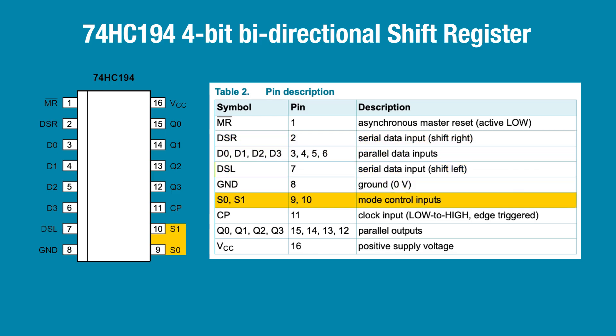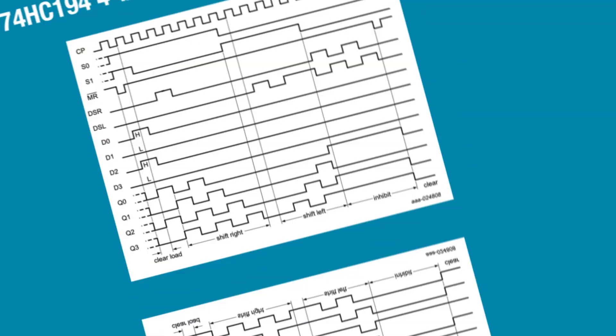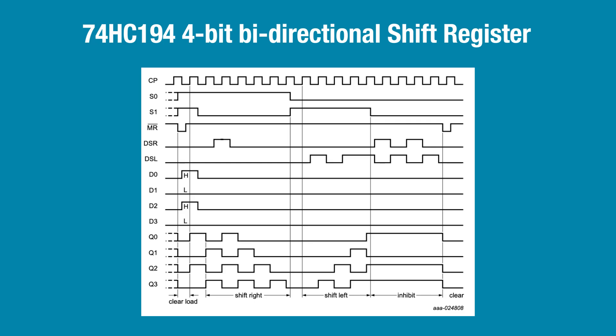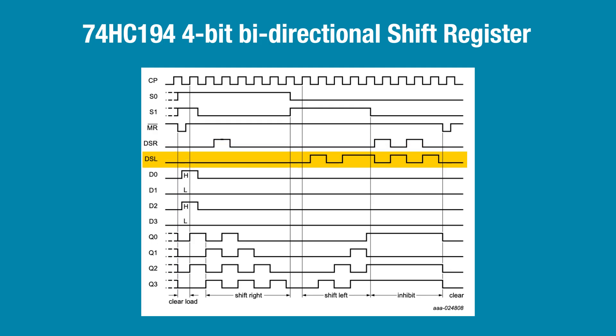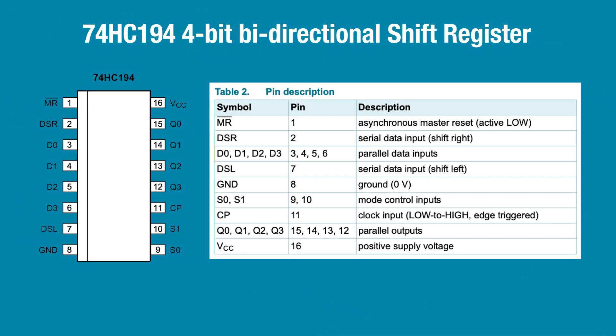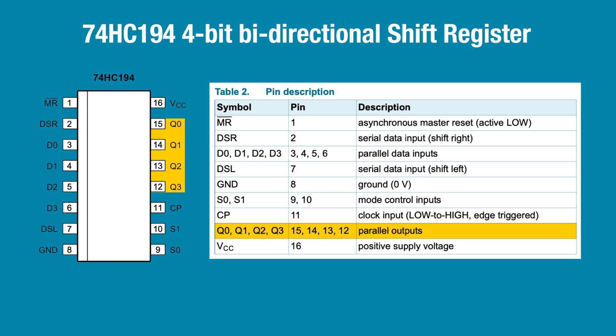Pins 9 and 10, S0 and S1, control which mode the chip is in. There are three possible input options: using serial input DSR, causing the data to shift right; using serial input DSL, causing the data to shift left; or transferring data directly from the four parallel inputs to the four parallel outputs.